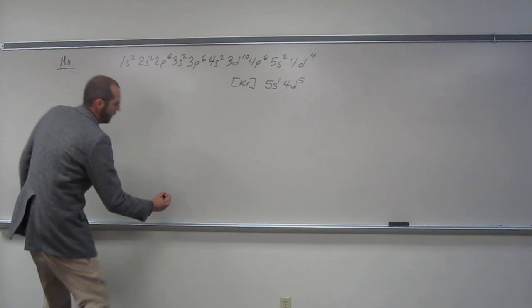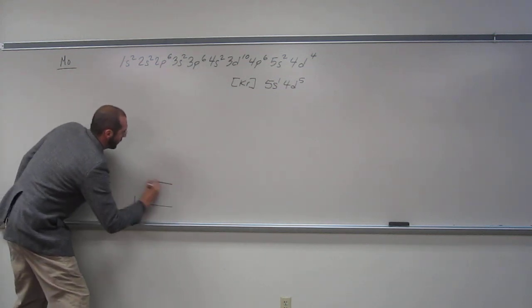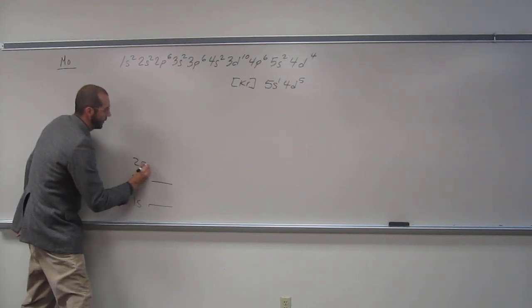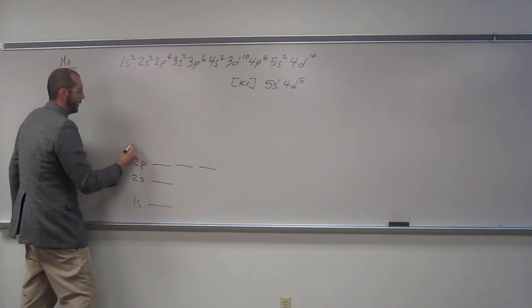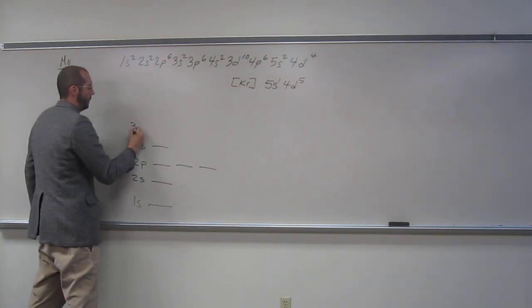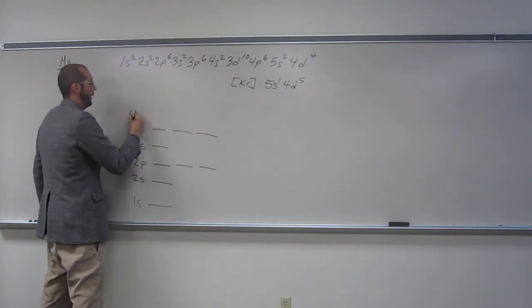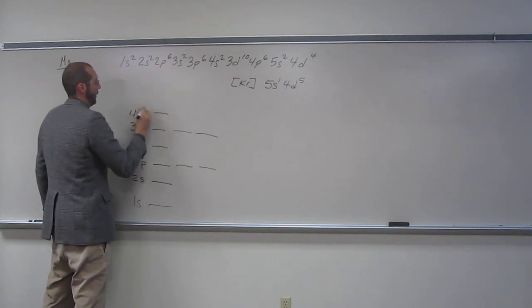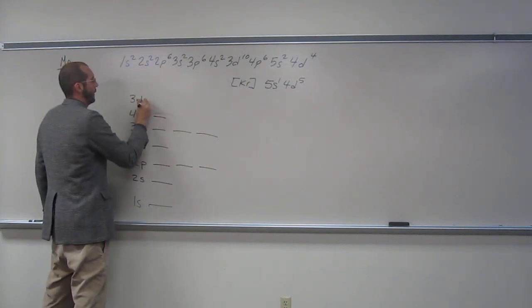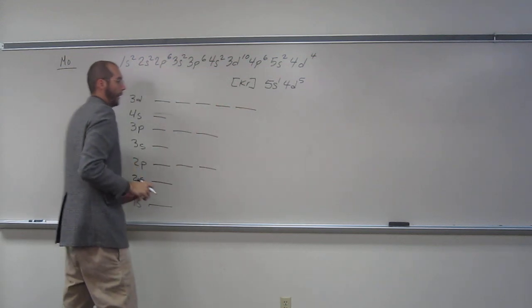So, where do we start? The 1s, way down here. Then the 2s. Then the 2p, how many orbitals? 3s, and then what's next, the 3s, 3p, 3 of them, 4s, 3d, how many? Five.